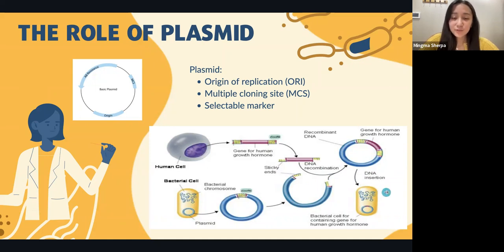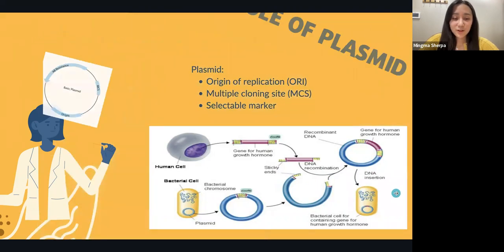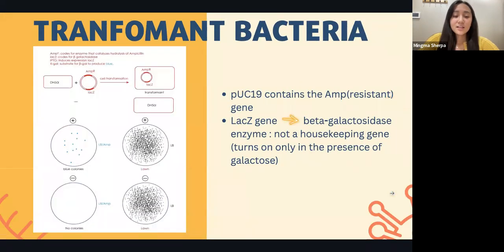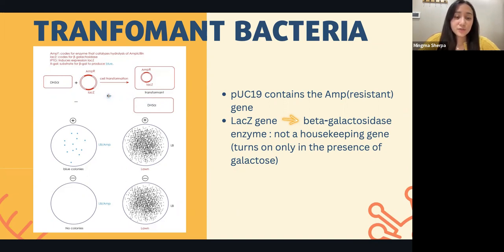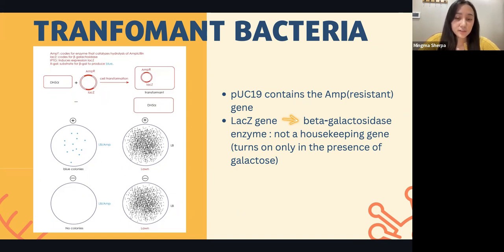I hope this gives you a brief overview of the transformation process. Now let's talk about what changes this transformation process brings to the bacterial culture by taking a specific selectable marker into consideration. Here we're using the PUC-19 plasmid, which contains the ampicillin resistance gene and the lacZ gene, which encodes for the beta-galactosidase enzyme. This antibiotic ampicillin inhibits cell wall synthesis, and bacterial cells cannot survive in this condition.